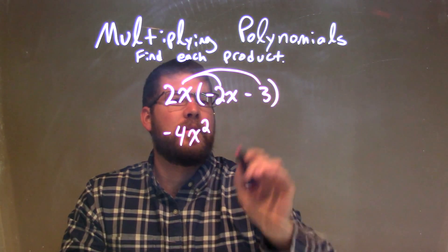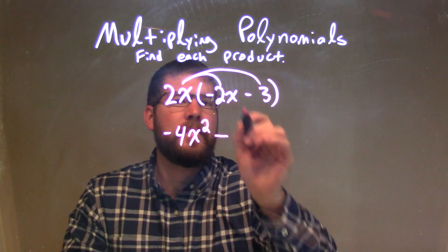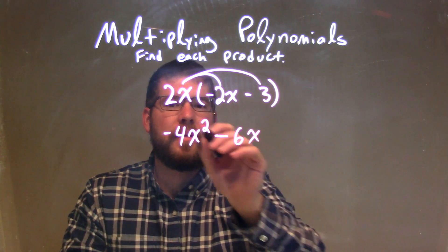Now we take the 2x times the 3, this subtraction sign is still in between, 2x times 3 is 6x, and there we go.